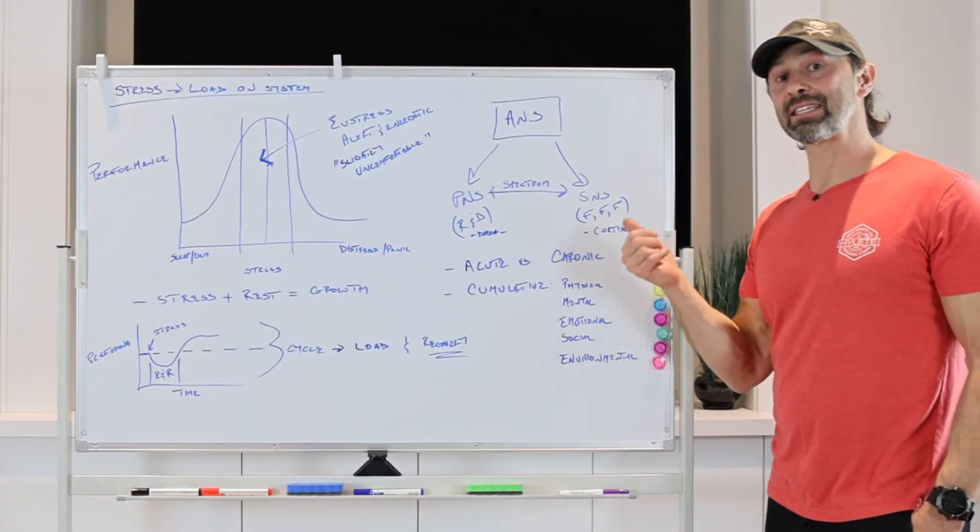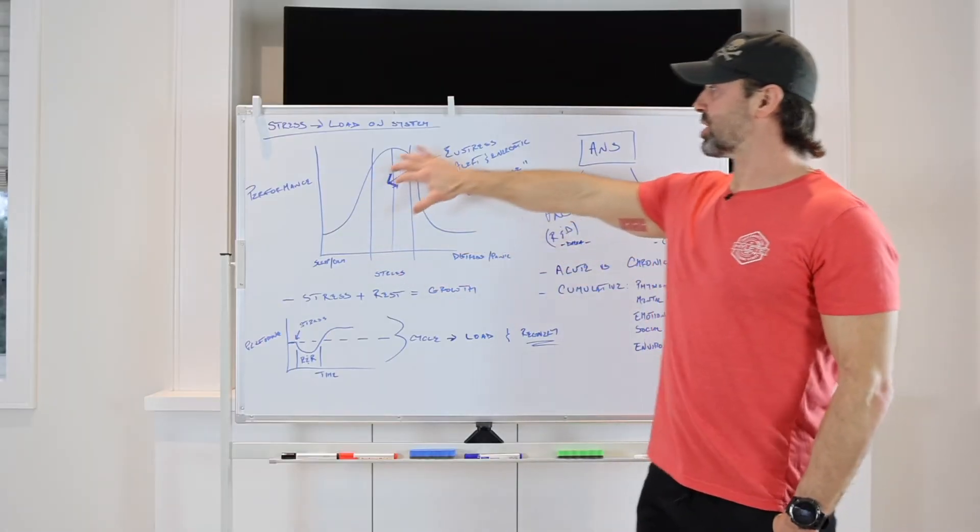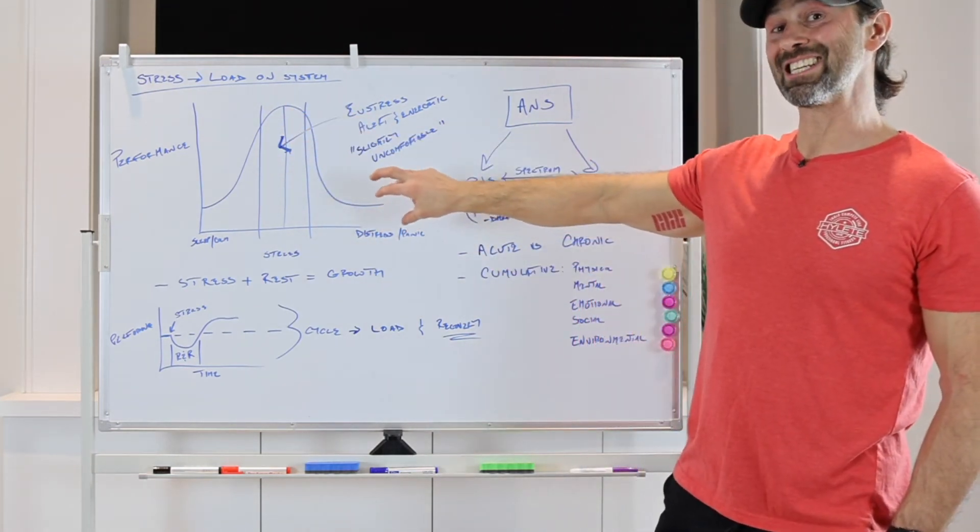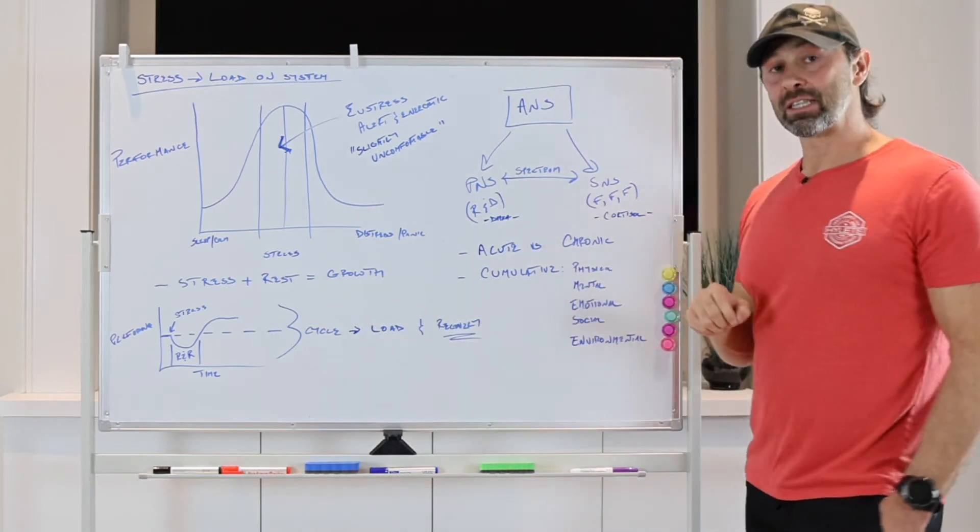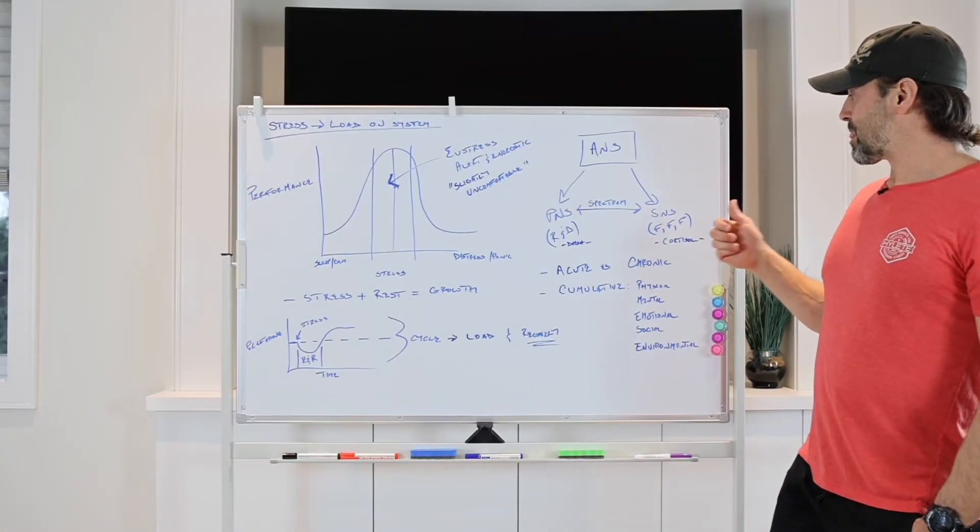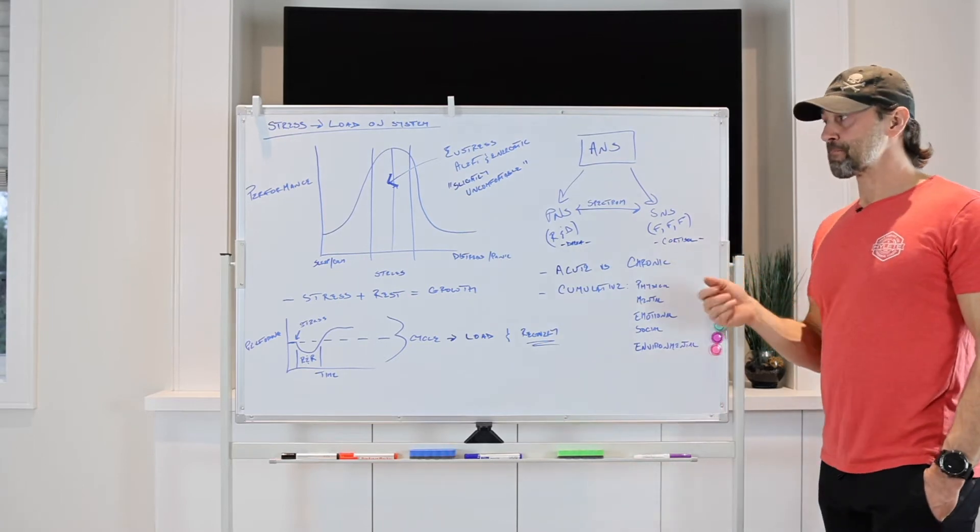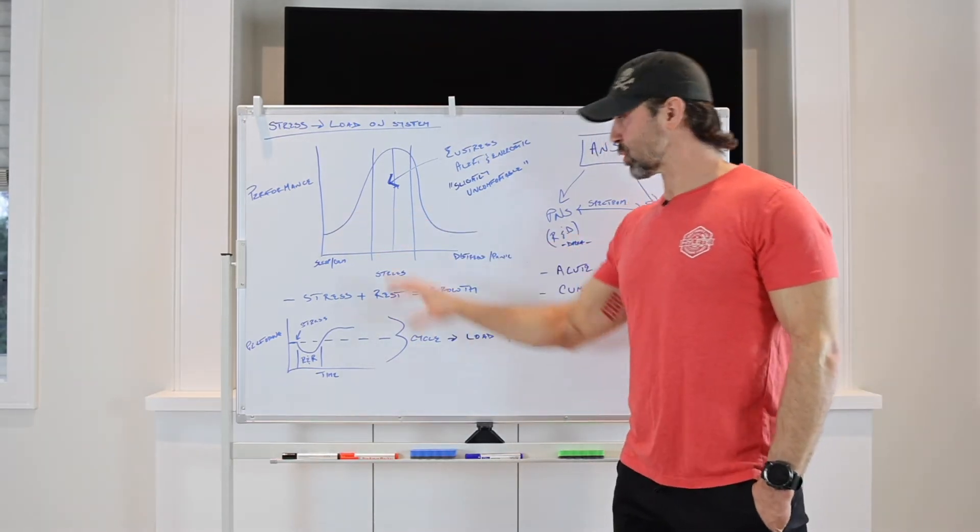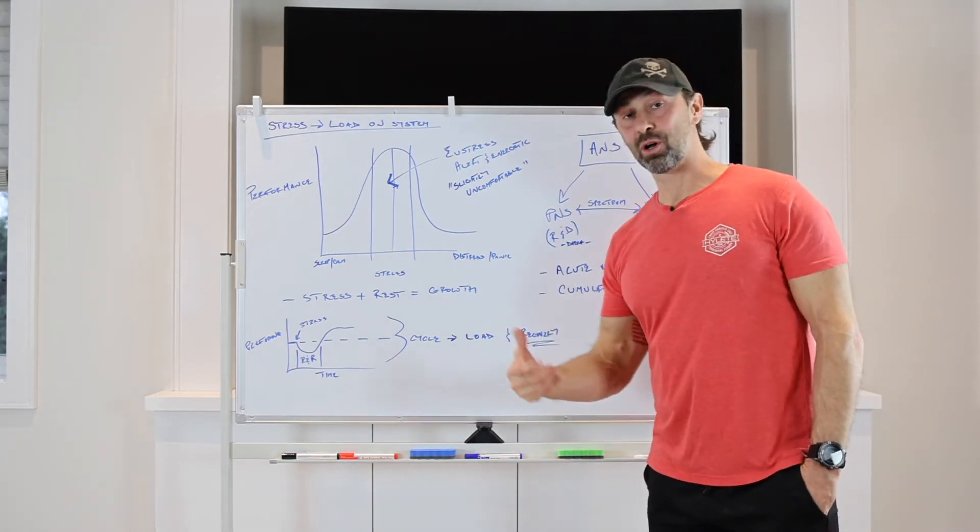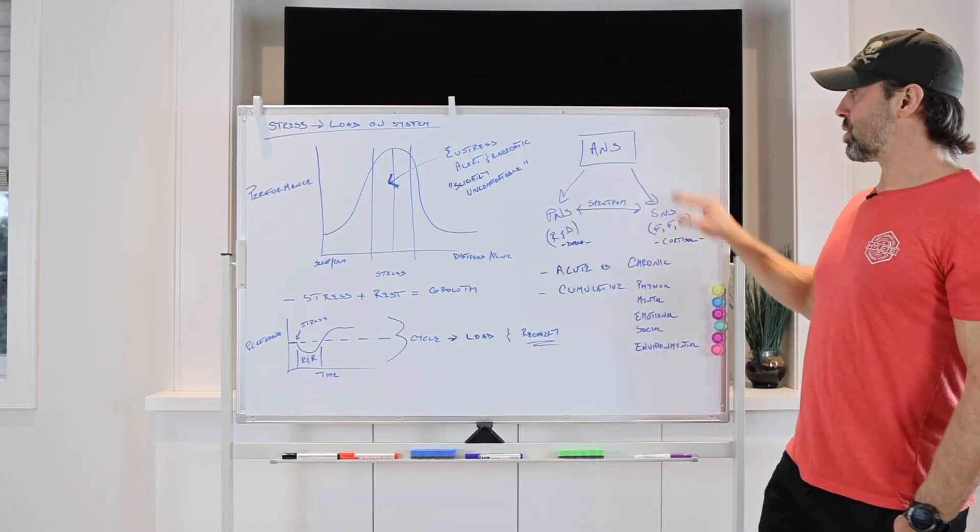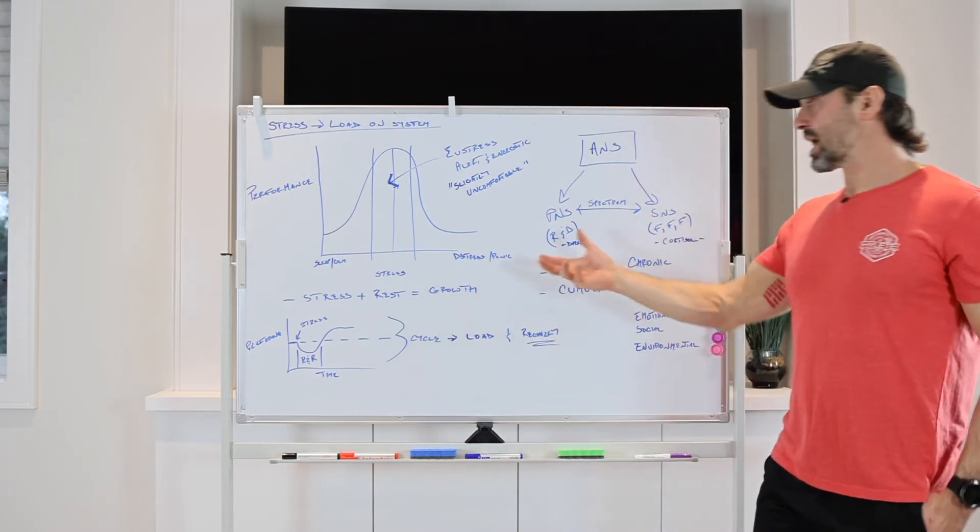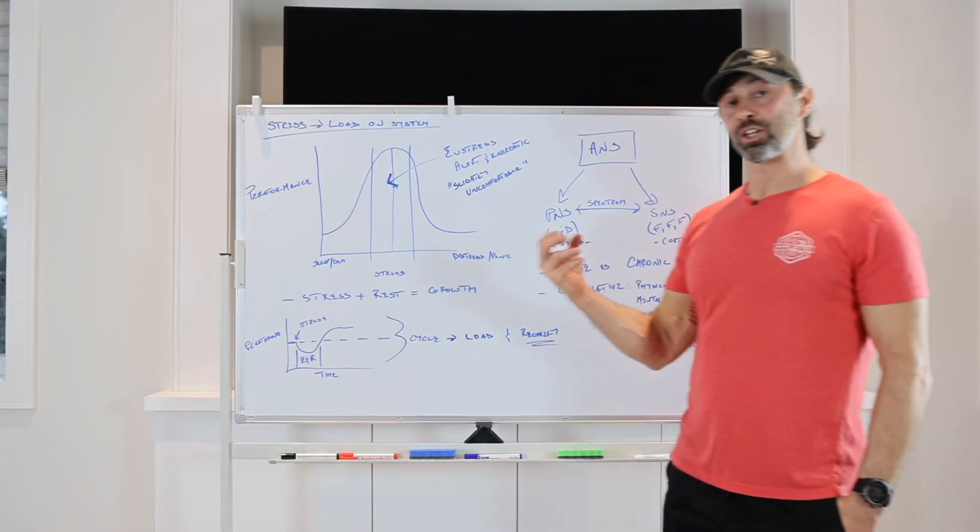And typically when we get very SNS dominant, that's when we're starting to climb up on this curve. And we're starting to get into that eustress range and possibly into a distressed range. And that SNS side of the equation is very cortisol dominant. We've done some videos on cortisol. That's the main hormone going to drive the fight or flight response. Where we're more in that rest or digest area or in that rest or recovery, we're going to get driven more DHEA dominant. We're going to get a lot more anabolic. We're going to get into more of a recovery state. So we're always in between PNS, SNS, depending on what the stress is. And this is a continuous acute shuffle that's going on throughout.